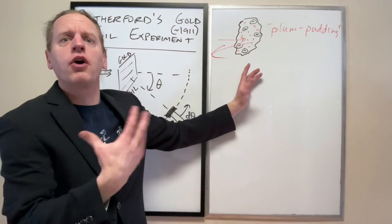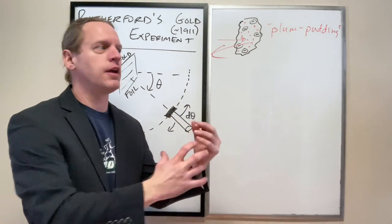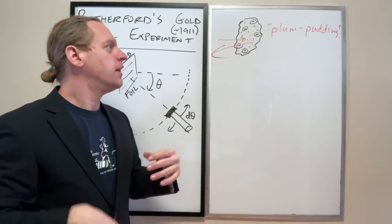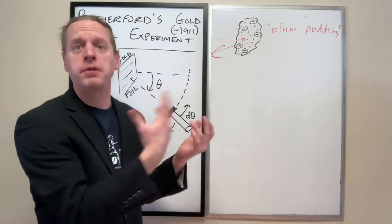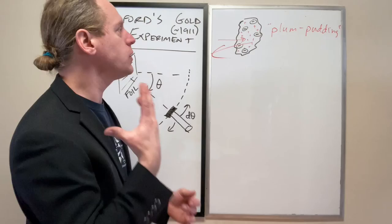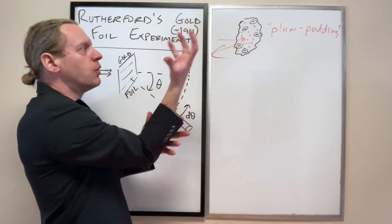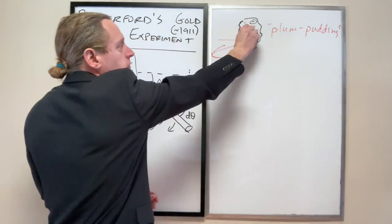What Rutherford described here, or his analogy, was it's like if you fire a 100-kilogram shell at a piece of tissue paper, and it comes right back at you. That's how, that's one way to describe what the, how unpredicted this effect was.